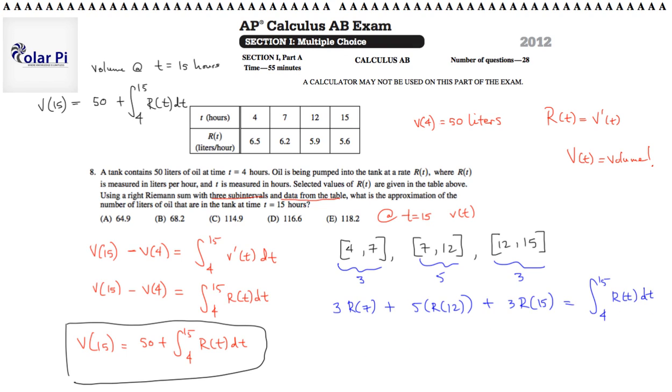Using the table values, at 7 it looks like it's 6.2, so we want 3 times 6.2. Plus 5 times r(12) is 5.9, I'm just going to use 6. I don't think we need to be too precise, and I know we don't have a calculator, so I want to guesstimate a little. Then it's 3 times r(15), so 3 times 5.6. 3 times 6.2 should be 18.6, then we have plus 30, and then plus 15 plus 1.8, that's 16.8.